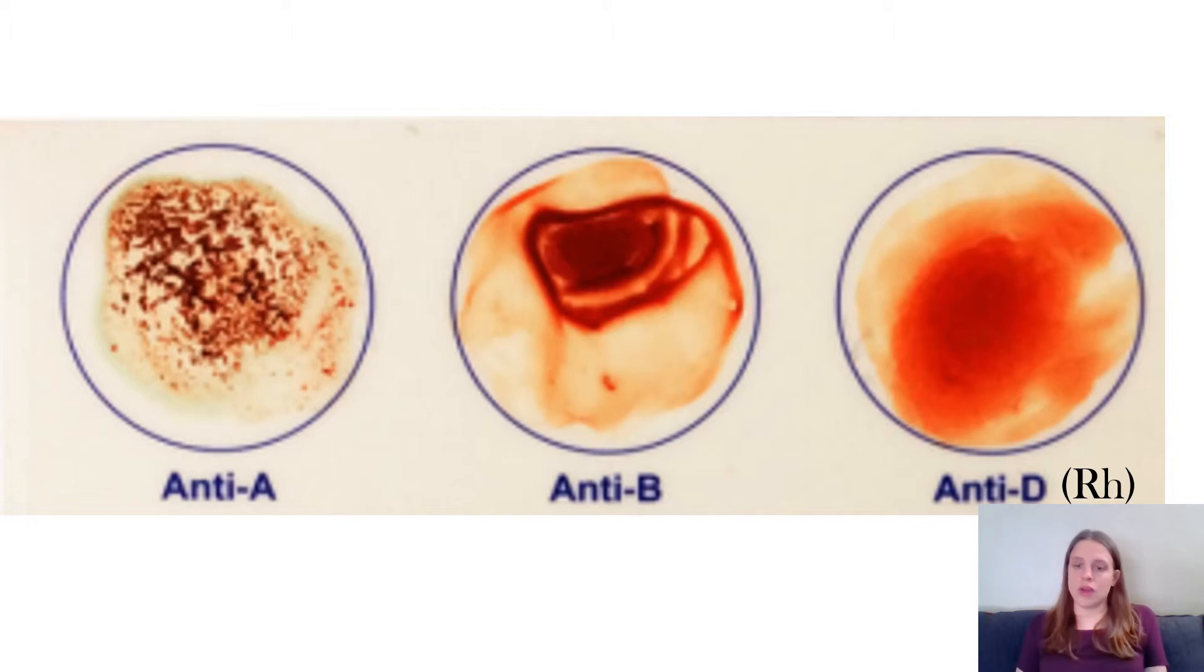So when you have a blood typing kit what they do is in each little circle there are different antibodies. In the first circle there are the anti-A antibodies, anti-B and anti-RH which here is referred to as D. So this person you can see in the first one there has been a reaction there has been agglutination, there's clumping but there's nothing going on in B or the RH. So what type of blood does this person have?